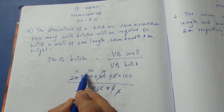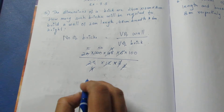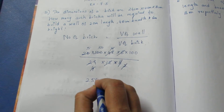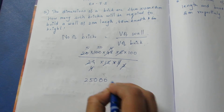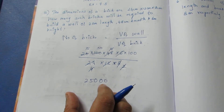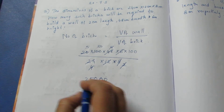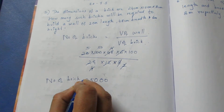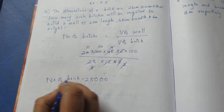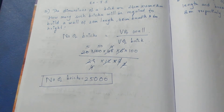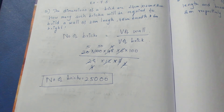Multiplying the remaining values: 5 fives are 25, then 25 times 10 is 250, times 20 gives 25,000. So the number of bricks is equal to 25,000. That is the answer to this sum. Thank you.